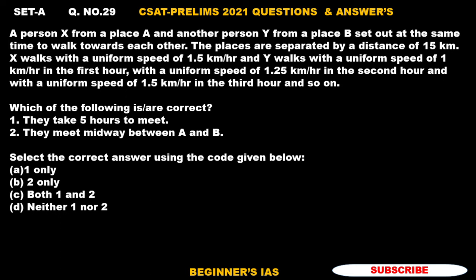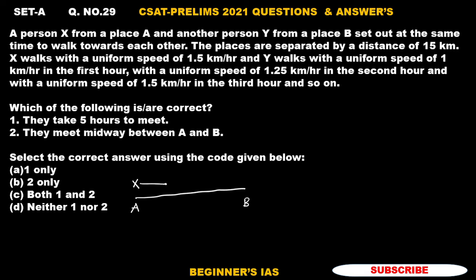Which of the following statements is correct: (1) They take five hours to meet, (2) they meet midway between A and B. We need to identify the correct answers. Let us do a simple diagram here. This is place A, this is place B. Person X walks towards B, and person Y walks towards A — they are approaching each other. We need to identify whether they are meeting at five hours or not.